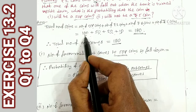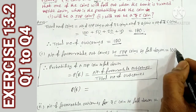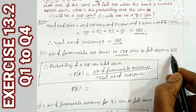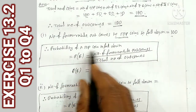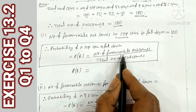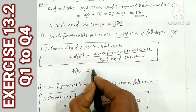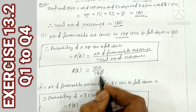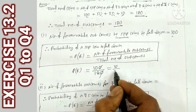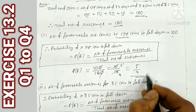50 paisa coins = 100. That is the number of favorable outcomes. Using the formula: P(50 paisa) = 100 / 180. Cancel the zeros: 10/18, which simplifies to 5/9. That is the answer.